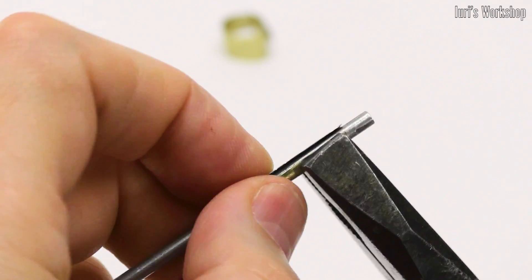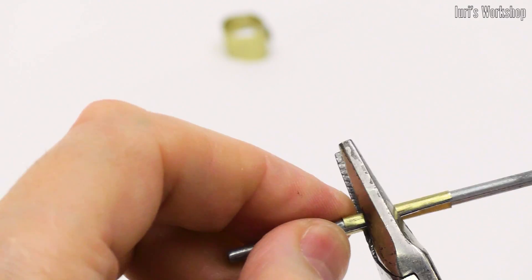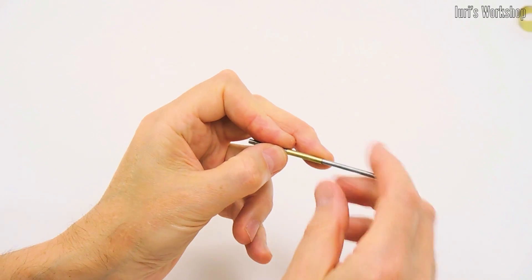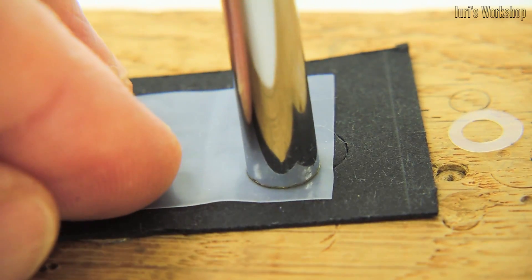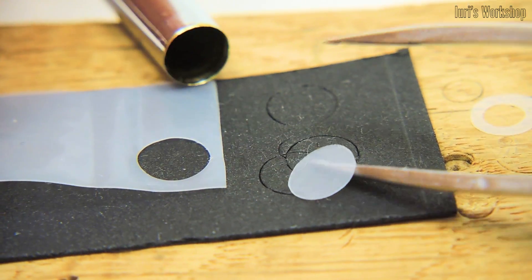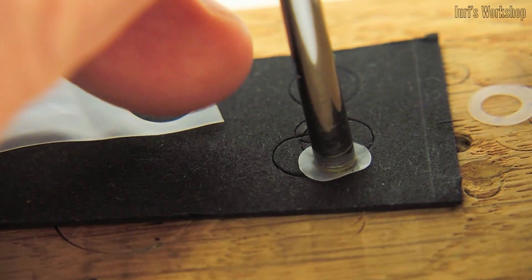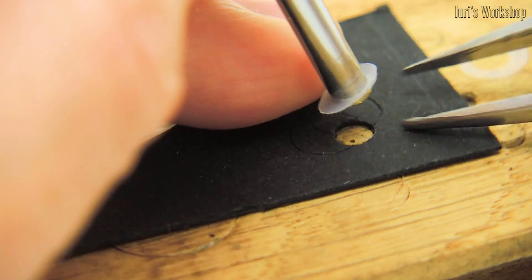The base of the heating element is a tube, which I also made from a tin can according to the drawing shown earlier. To fill the heater with heat-resistant mastic, we need two washers made of teflon tape.